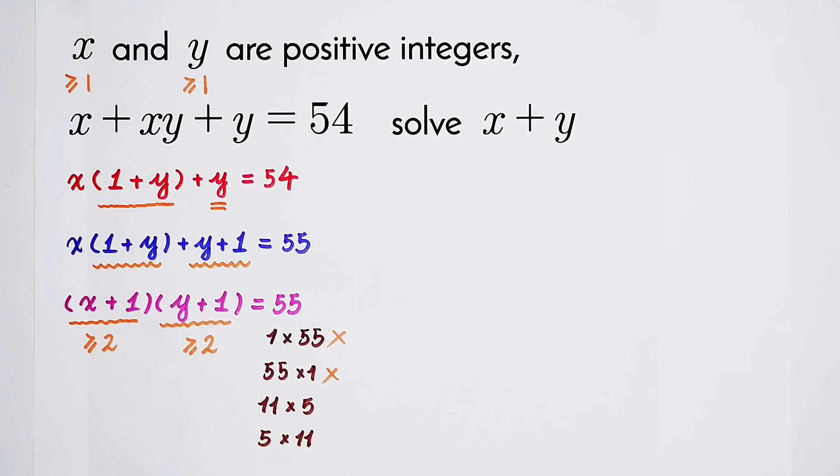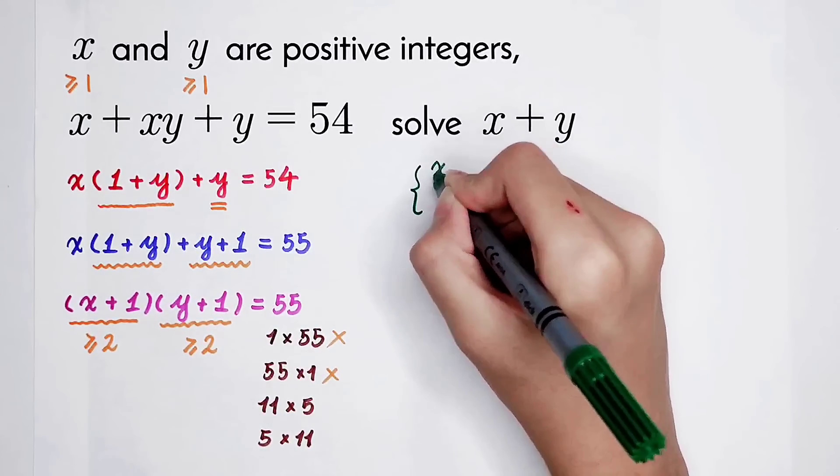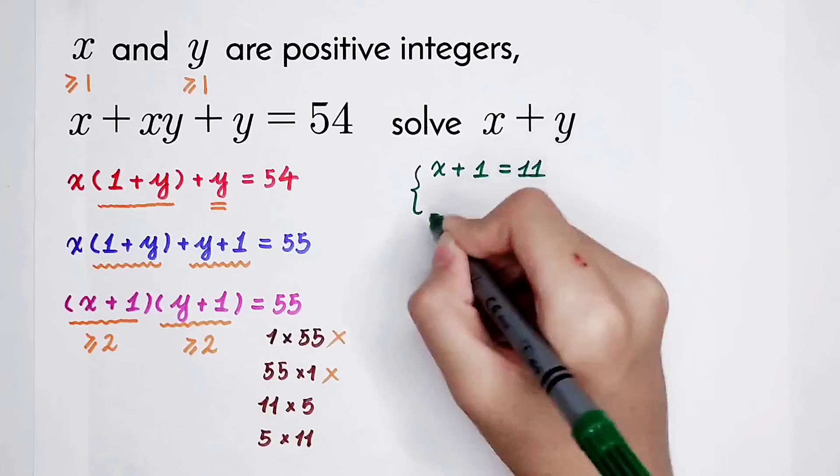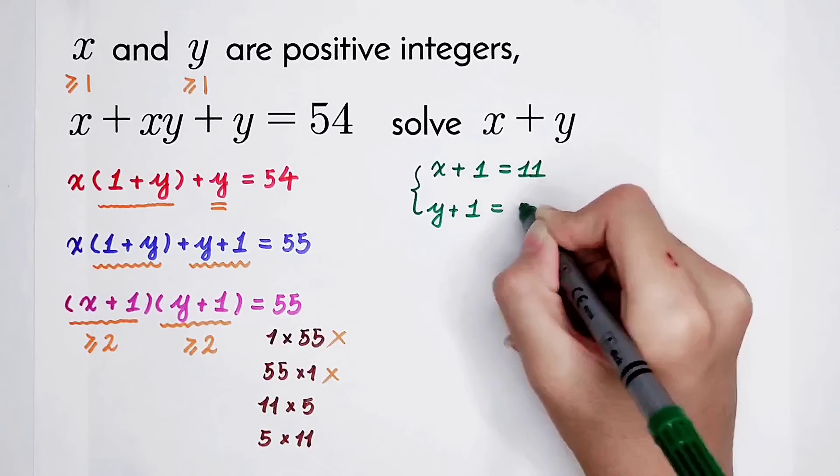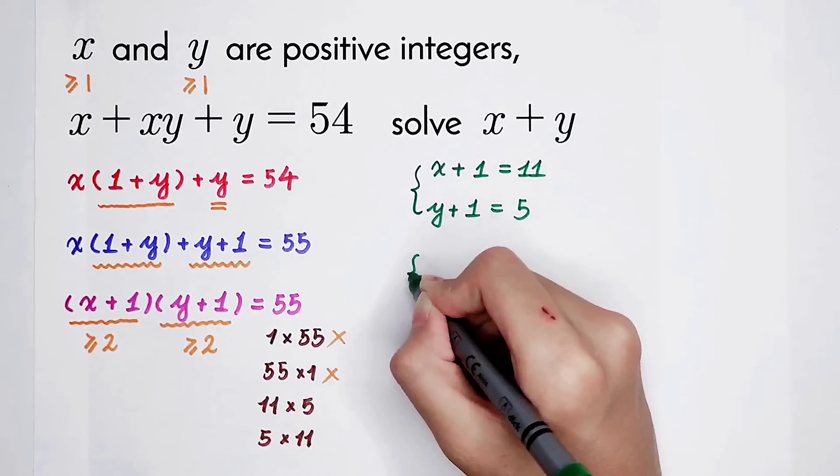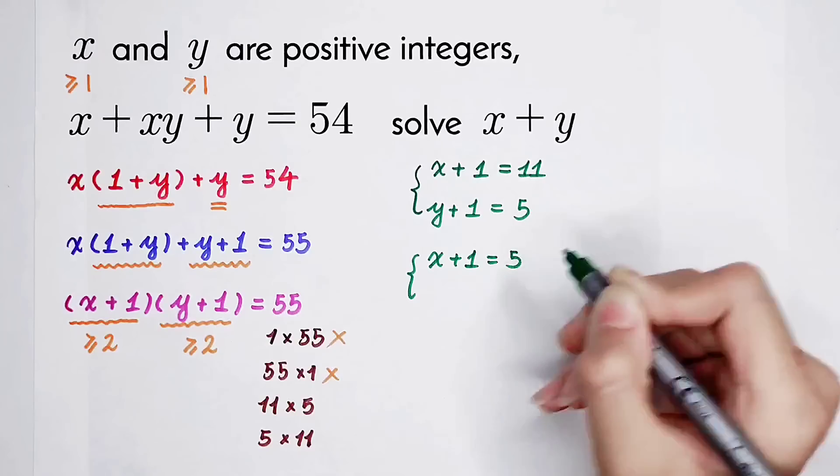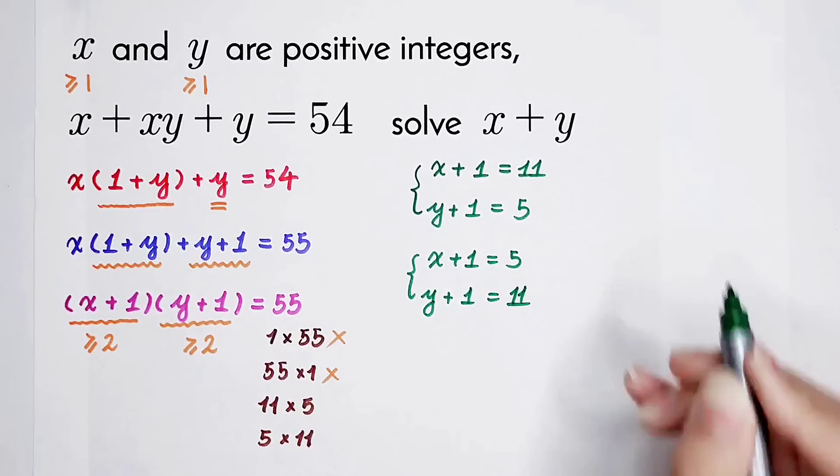So I think this problem is quite easy, isn't it? Now, 11 times 5, 5 times 11. There are two cases. The first case: x plus 1 is 11, y plus 1 is 5. The second case: x plus 1 is 5, and y plus 1 is 11.